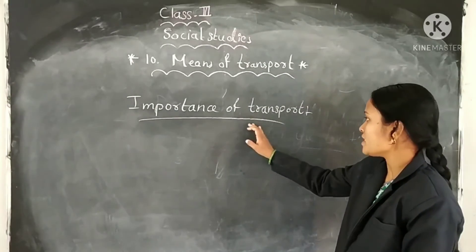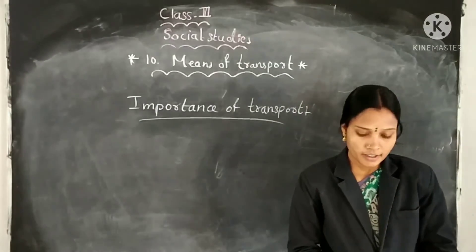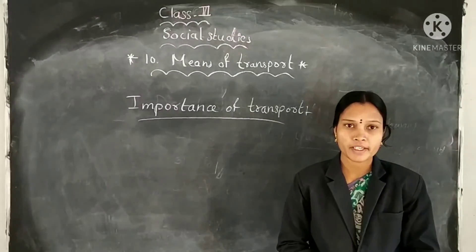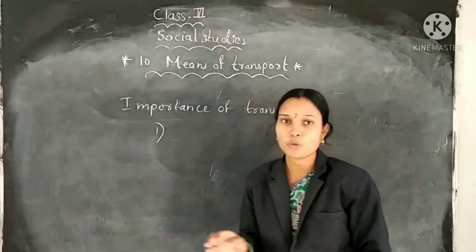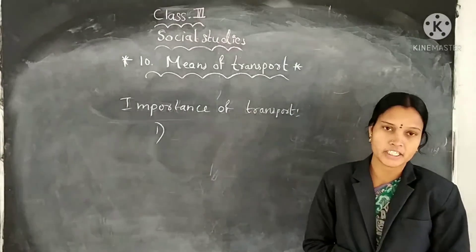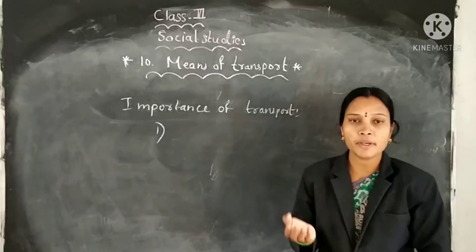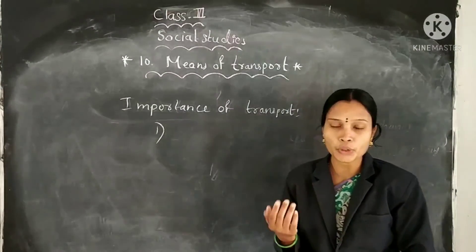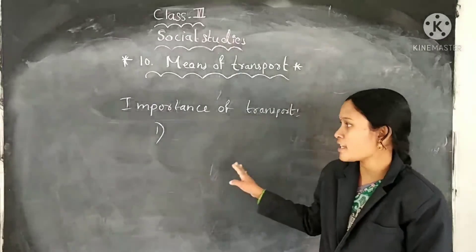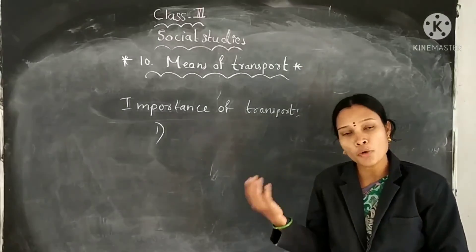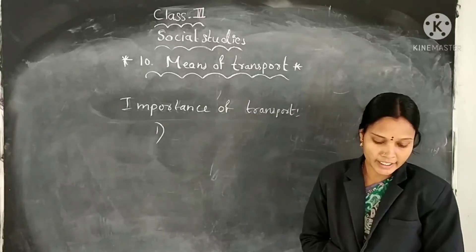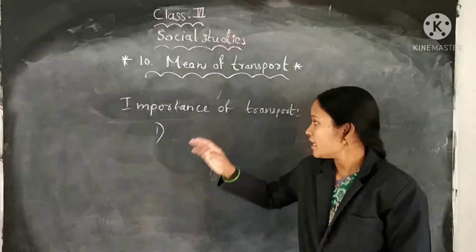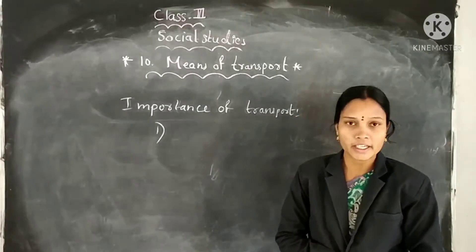Next topic is the importance of transport. Different means of transport are very important in the modern age. They bring different countries closer and make them more friendly with one another. The means of transport enables us to move faster, and they also help to move goods faster.